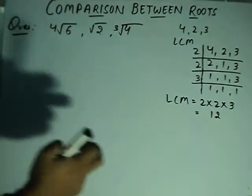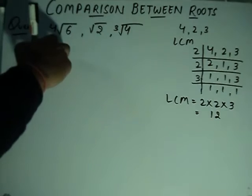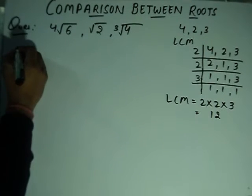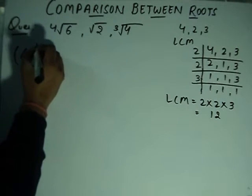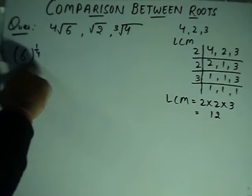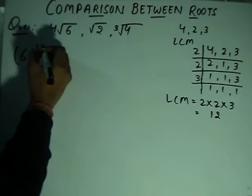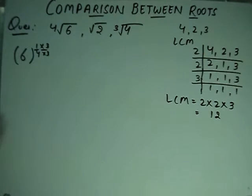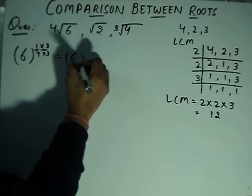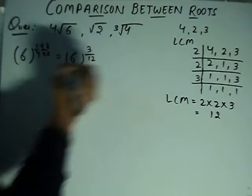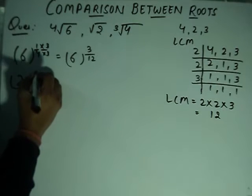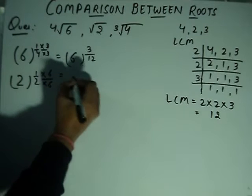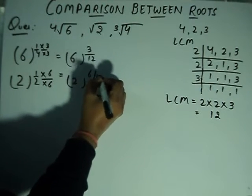Now I will use 12 as the common denominator. For the first term, 6 to the power of 1 by 4, I multiply the exponent to get 6 to the power of 3 by 12. For the second term, 2 to the power 1 by 2, I multiply by 6 and divide by 6 to get 2 to the power 6 by 12.